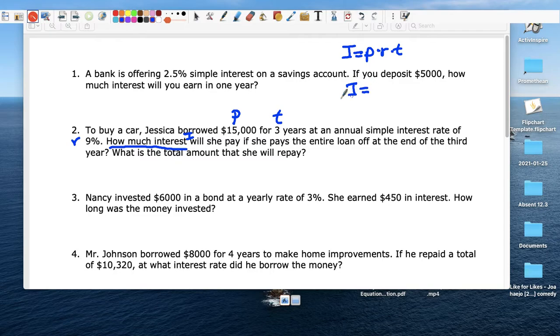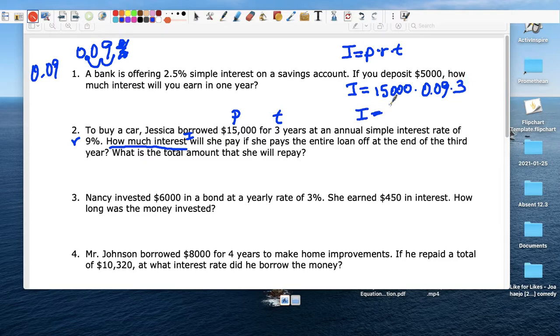So that's what we're trying to calculate right now. So I, P is $15,000. The rate is 9%. 9%. We change it, right? Move 1, 2, and put a 0 and a 0. So it's 0.09. So I'm going to change that to 0.09. And the time is three years. You pay it all in three years.